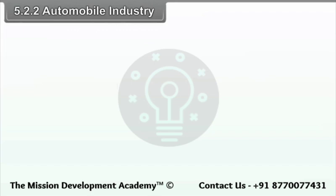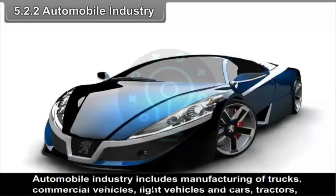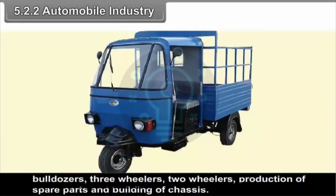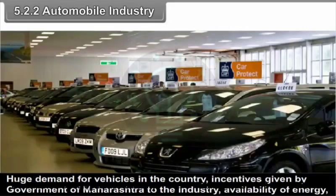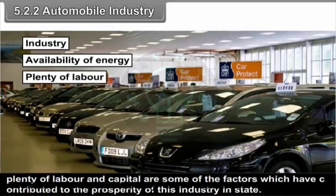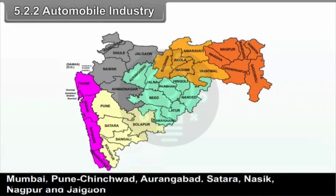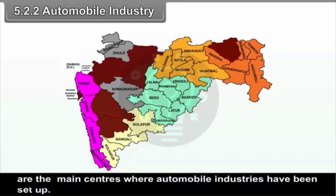The automobile industry includes manufacturing of trucks, commercial vehicles, light vehicles and cars, tractors, bulldozers, three wheelers, two wheelers, production of spare parts, and building of chassis. Huge demand for vehicles, incentives given by the Government of Maharashtra, availability of energy, plenty of labour and capital have contributed to the prosperity of this industry. Mumbai, Pune-Chinchwad, Aurangabad, Satara, Nasik, Nagpur, and Talegaon are the main centres where automobile industries have been set up.